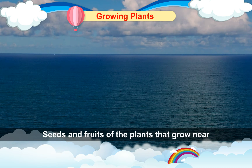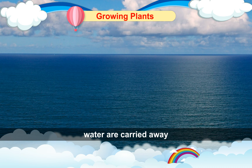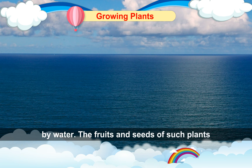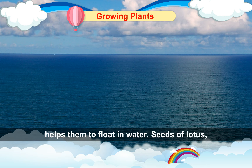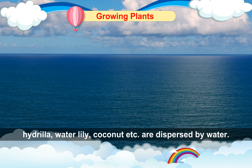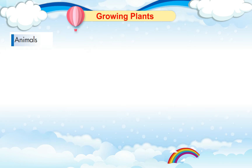Water: seeds and fruits of the plants that grow near water are carried away by water. The fruits and seeds of such plants have a spongy or fibrous outer covering that helps them to float in water. Seeds of lotus, hydrilla, water lily, coconut, etc. are dispersed by water.